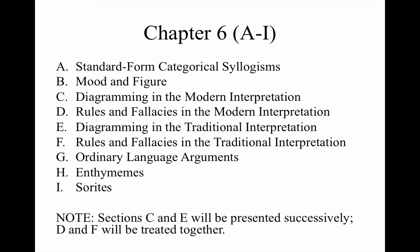Among other things, we know how to translate an ordinary language sentence into standard form for categorical logic. We know how to construct a Venn diagram that will reveal the logical structure of a categorical proposition. We know how to draw inferences around both the modern and traditional square of opposition, and we know how to make other immediate inferences, namely obversion, conversion, and contraposition, on both the modern and traditional interpretation of the universal claim.